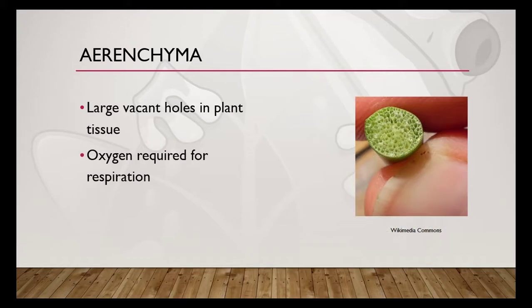The first strategy for wetland plants to get oxygen to their tissues is called aerenchyma. It is when roots and stems develop large holes in the tissue. This strategy makes for very porous plant tissue. For example, a typical plant has a porosity of maybe two to seven percent of their tissue, while a typical wetland plant can have up to 60% porosity in their stems and root systems. This accommodates the oxygen needed for respiration.